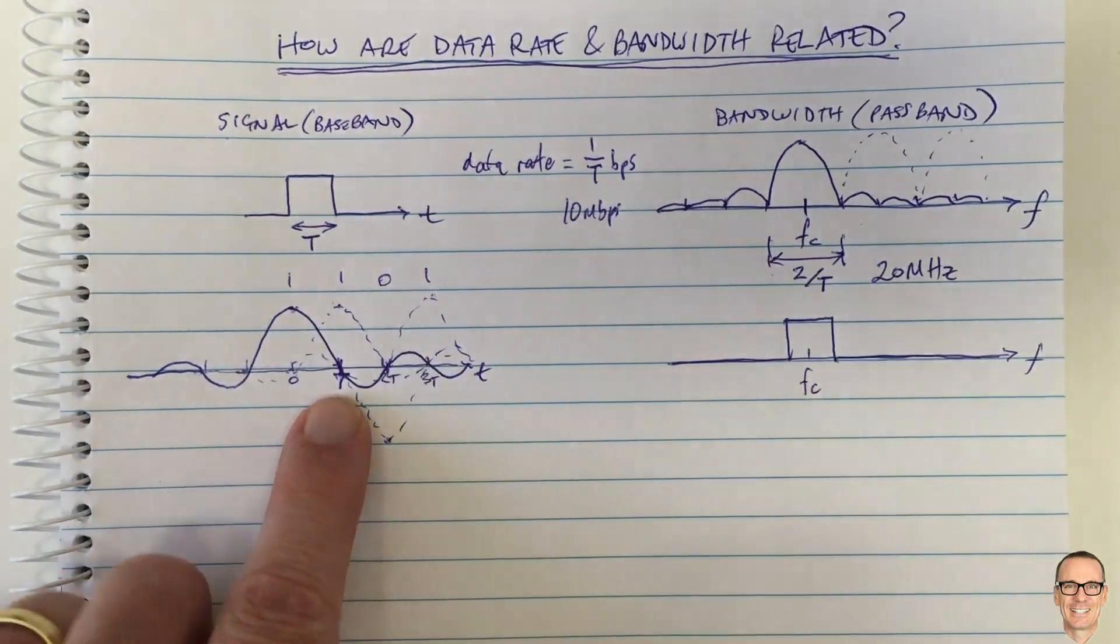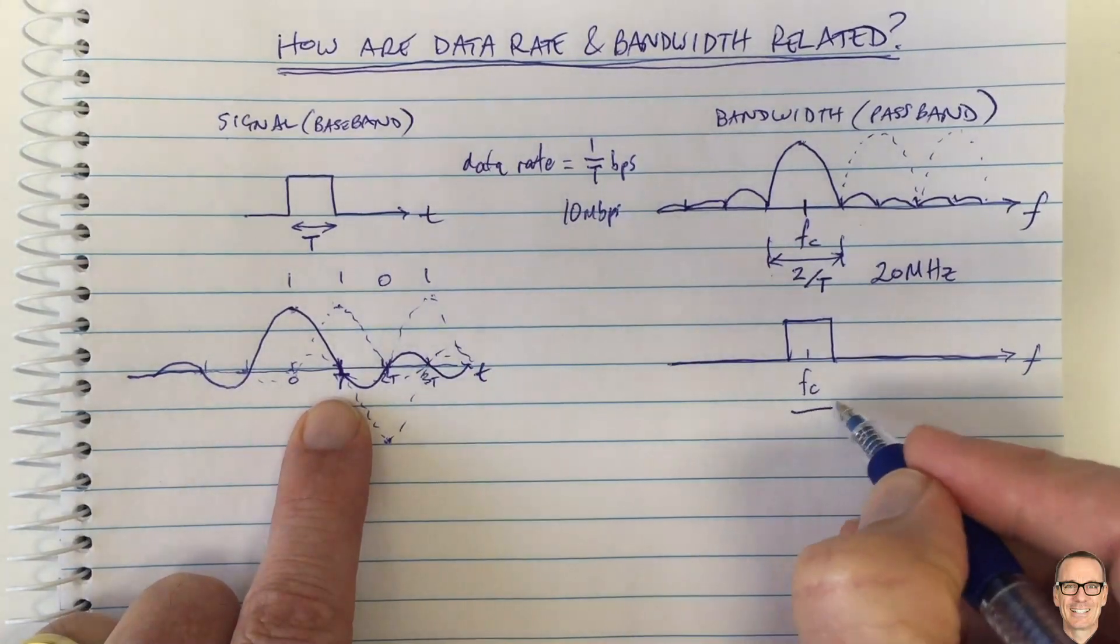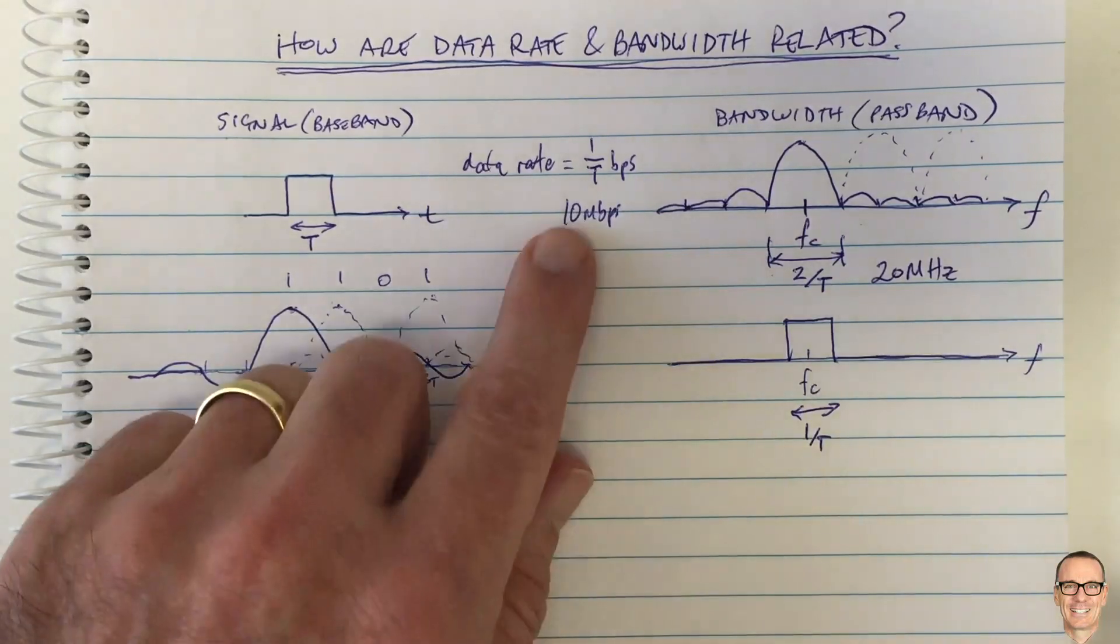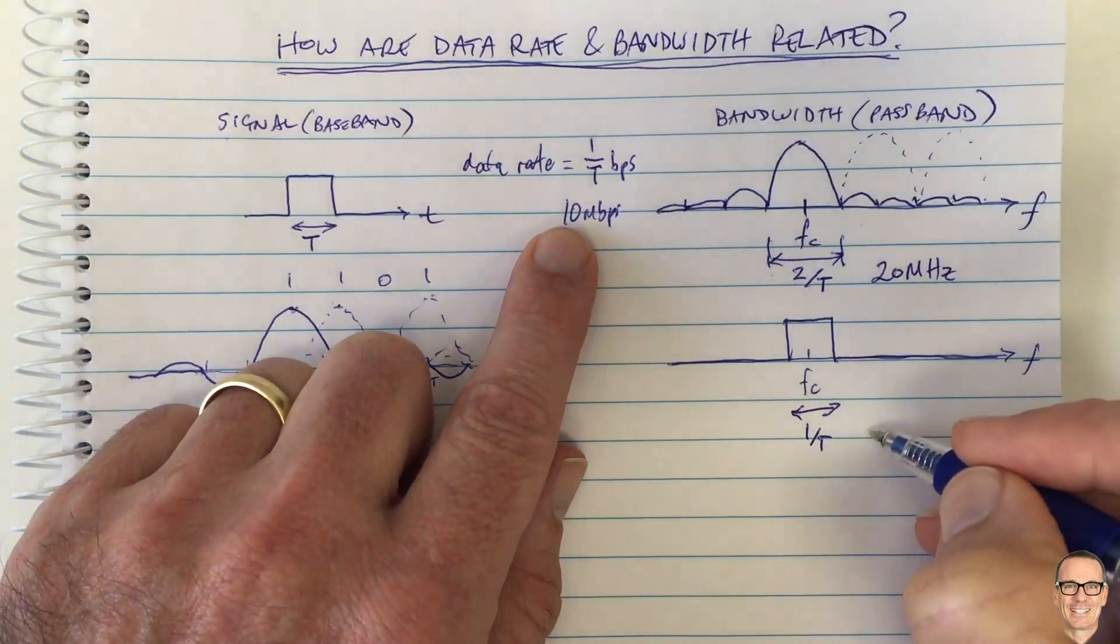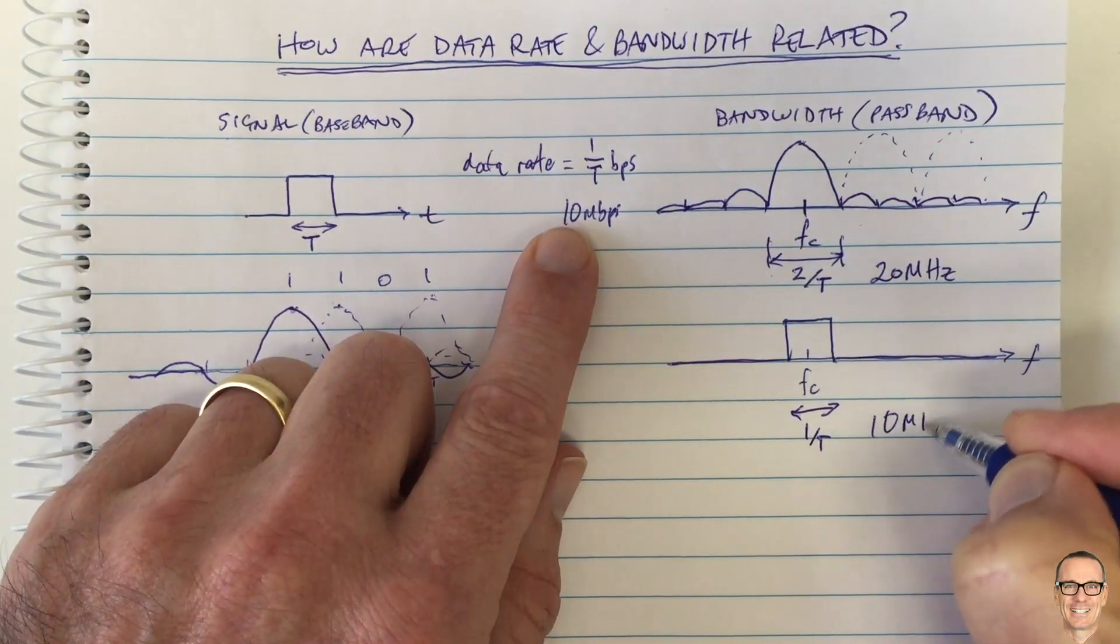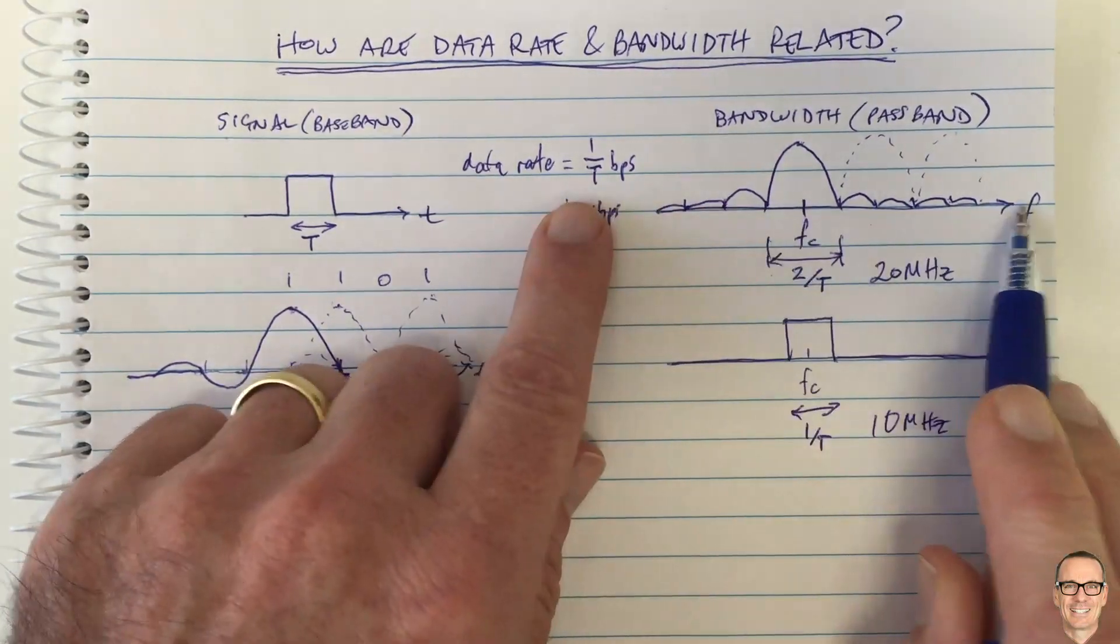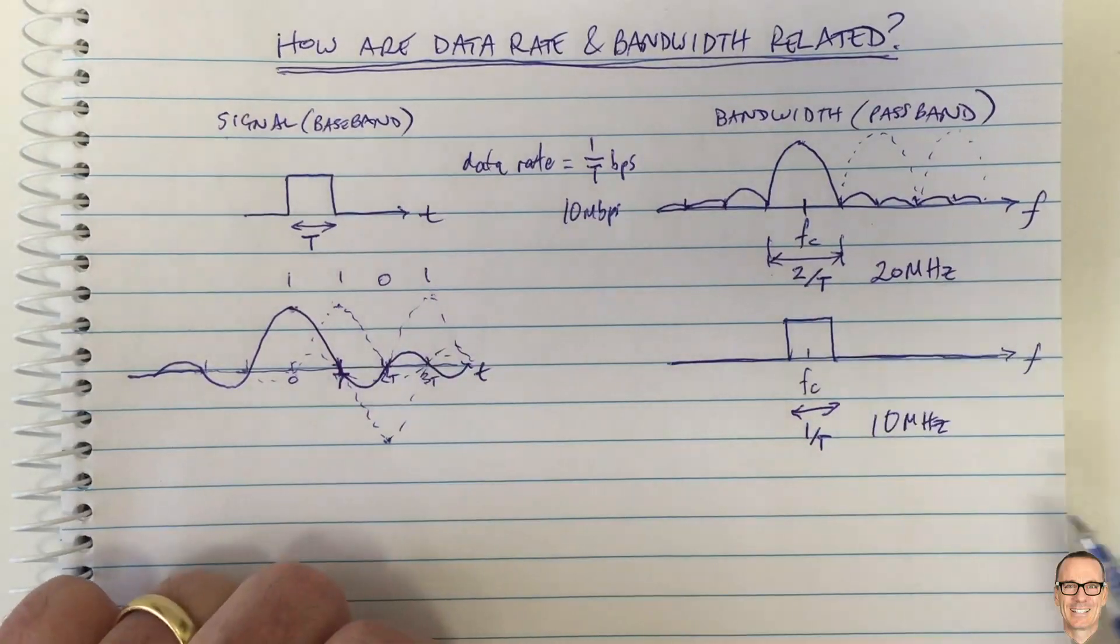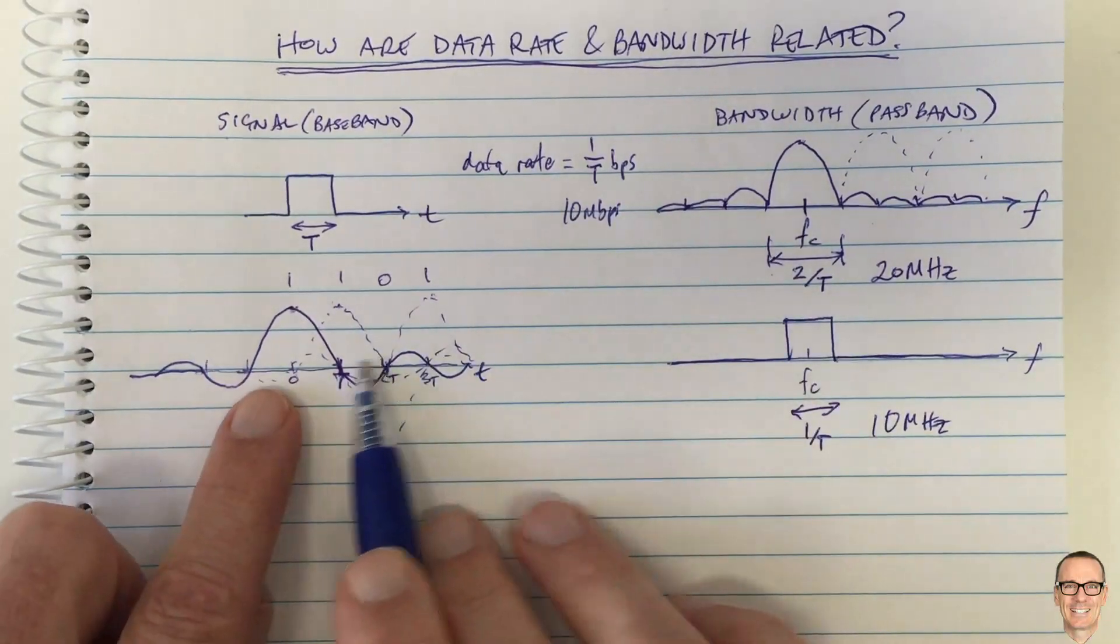For this time of sending capital T, this bandwidth here is 1 divided by T. So for our example before, 10 megabits per second, this would be 10 megahertz, which is certainly less than infinity and it's less than even the main lobe of this which was 20 megahertz. So that sounds good and they don't overlap.